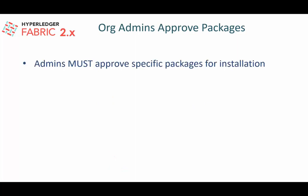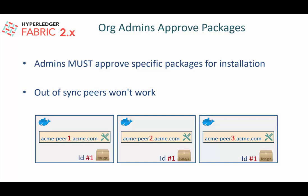In Fabric 2.x, organization administrators must approve specific packages for installation on peers across the organization. If any peer has an older package or does not have the approved package, it won't be able to process requests. For example, if the Acme organization has three peers all consistent in their installed chaincode package, and the admin approves a new package, peers one and two will continue to work — but peer three, having the older version, will not be able to process requests.